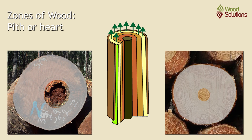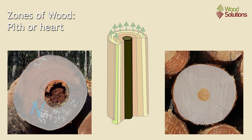The pith, or the heart, is found near the centre of the log. It's made up of soft spongy tissue that's originally from the sapling of the tree, or the original growing tip as it went through. Generally, its quality is much lower than mature wood that we'll find further out in the stem.